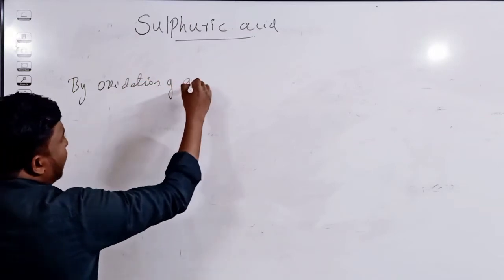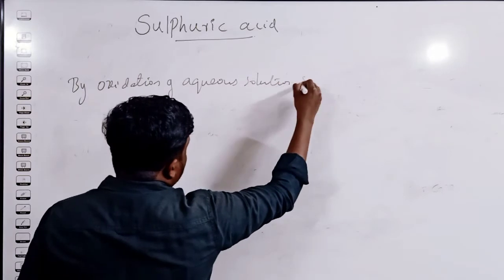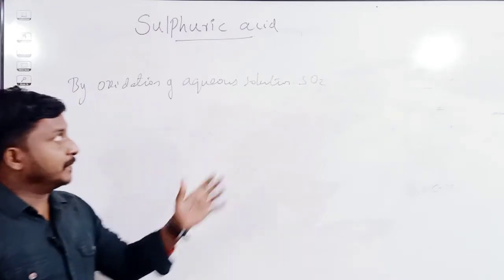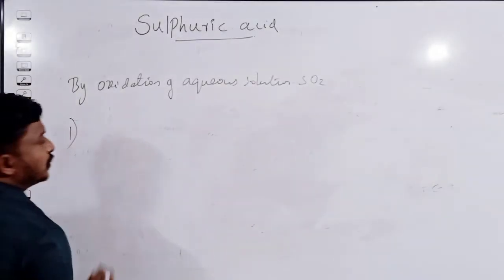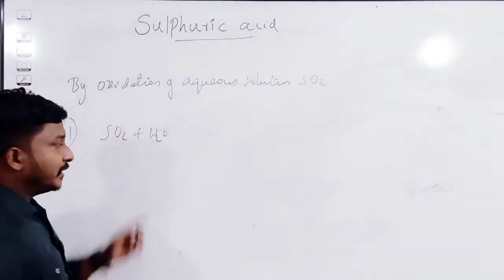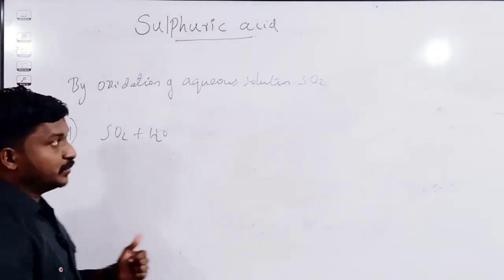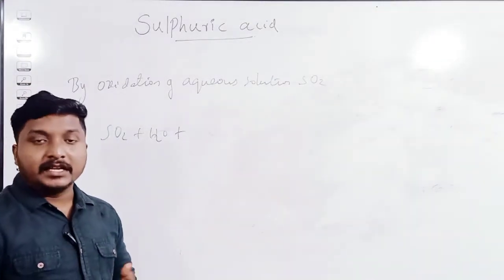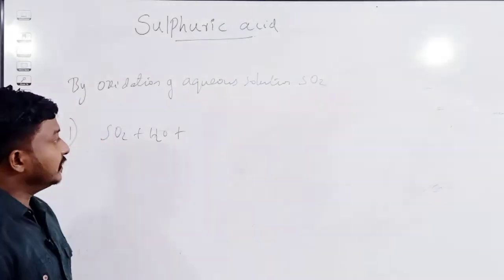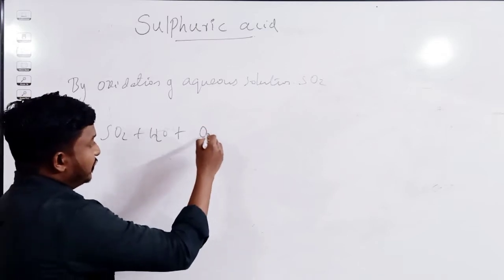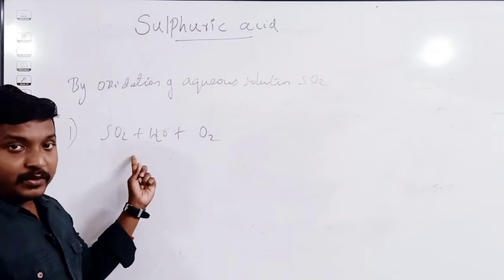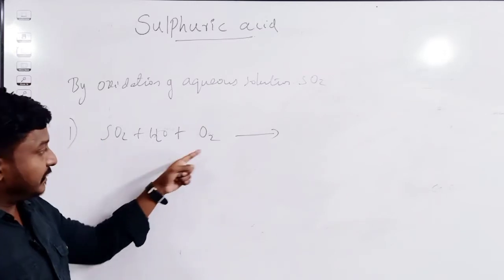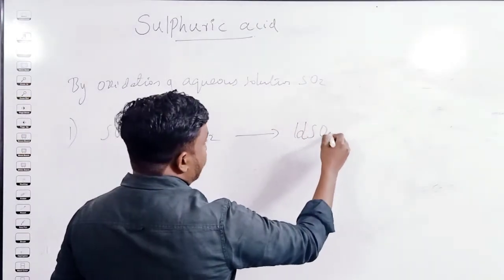We prepare sulfuric acid by the oxidation of an aqueous solution of sulfur dioxide. Aqueous solution of sulfur dioxide means SO₂ dissolved in water — SO₂ + H₂O. By the addition of oxygen to this aqueous solution of sulfur dioxide, we can prepare sulfuric acid: SO₂ dissolved in water plus O₂ gives H₂SO₄.